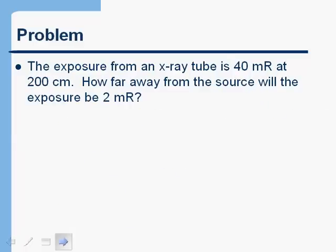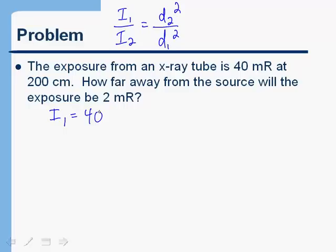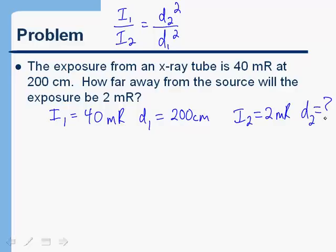Let's do another example that's a little different — in this one we're looking for a distance instead of an intensity. Using the inverse square law: i1/i2 = d2²/d1². The problem says: the exposure of an x-ray tube is 40 milliroentgens at 200 centimeters. How far away from the source will the exposure be 2 milliroentgens? So i1 = 40 milliroentgens at d1 = 200 centimeters, and i2 = 2 milliroentgens at an unknown distance d2.